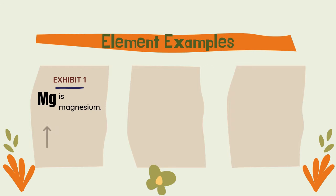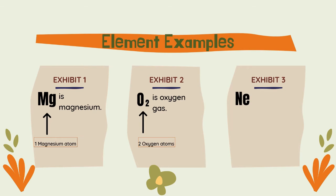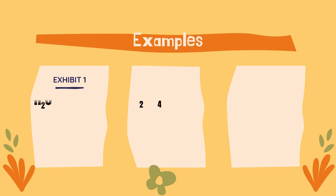Let's look at element examples. Mg is the symbol for magnesium. The chemical formula Mg means that it has one atom of magnesium. Example 2: O2 is oxygen gas. The subscript 2 beside oxygen means that we have two oxygen atoms in every oxygen molecule. The last example is Ne, representing neon gas. Ne is the symbol for neon and we have no subscript beside Ne, which means we have one neon atom. That's it for elements.